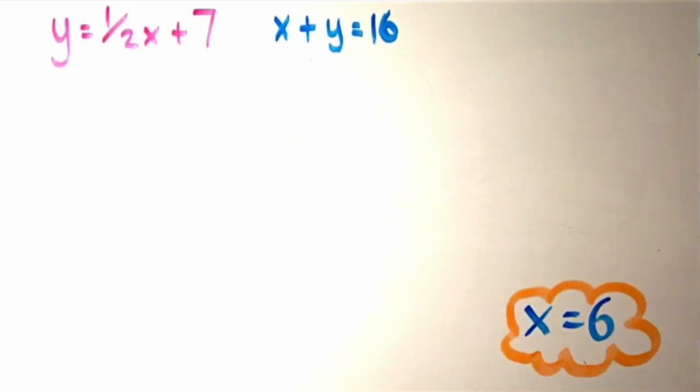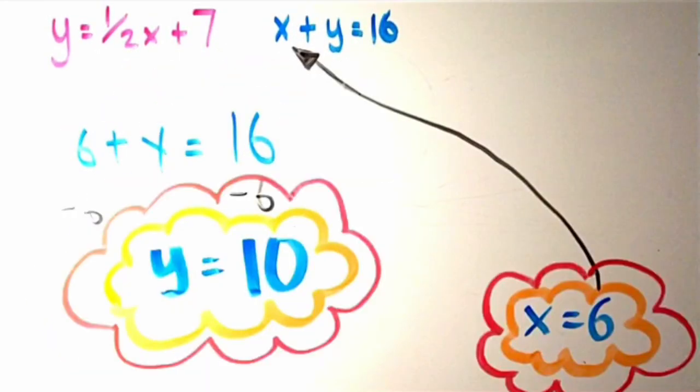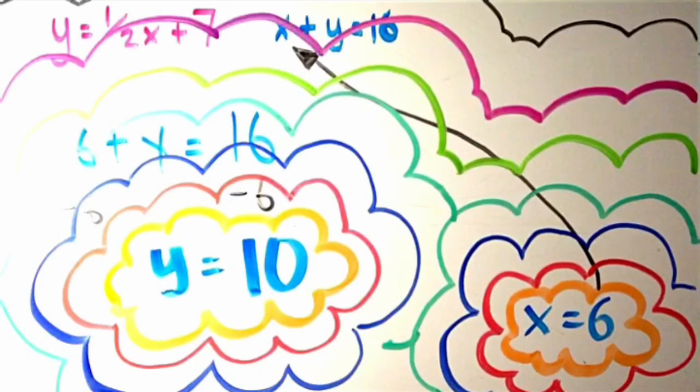Now we have X equals 6. And we can plug this back into our other equation, leaving us with Y equals 10. Our coordinate on the graph is 6, 10.